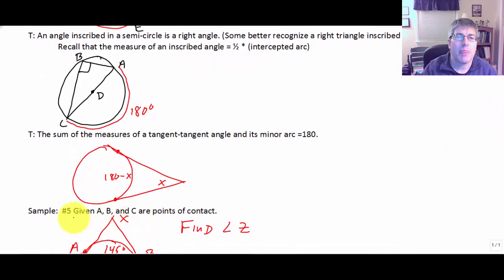And finally, our last theorem, the sum of the measures of a tangent tangent angle and its minor arc equals 180. So angle A and arc BC must add up to 180 degrees. They are supplements.